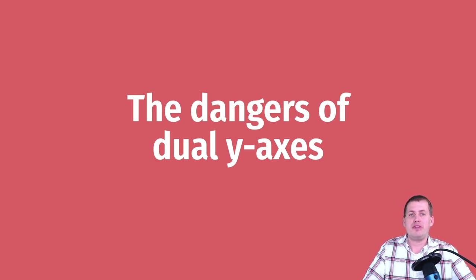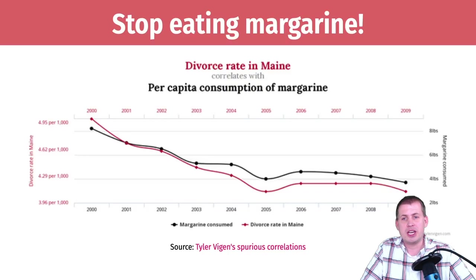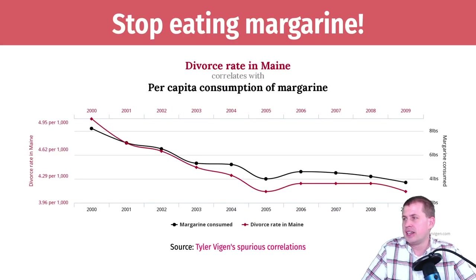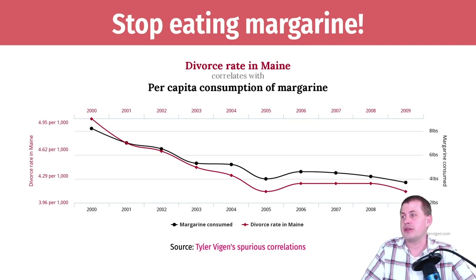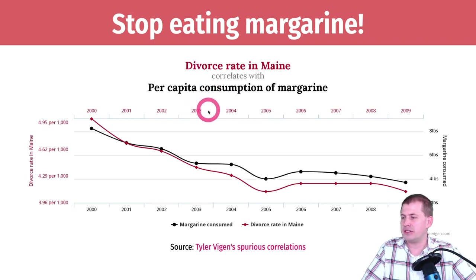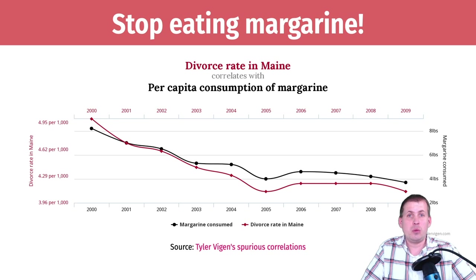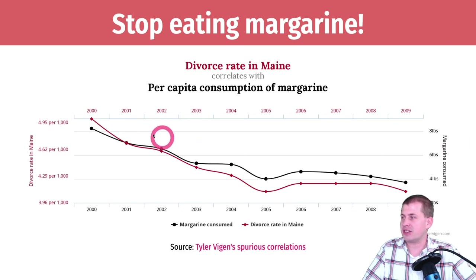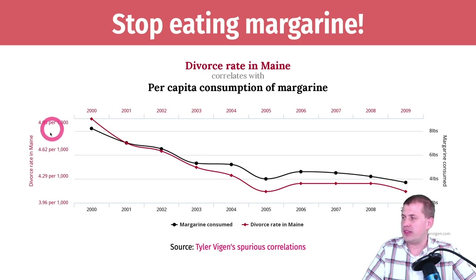They're interesting because they tell all sorts of stories about the relationships between two variables. For instance, this plot shows actual data: the divorce rate in Maine and the per capita consumption of margarine in the United States are actually highly correlated — the correlation is something like 0.99, which is really closely related. But that's actually a very spurious correlation, and it looks like they're correlated only because of how the graph was constructed.